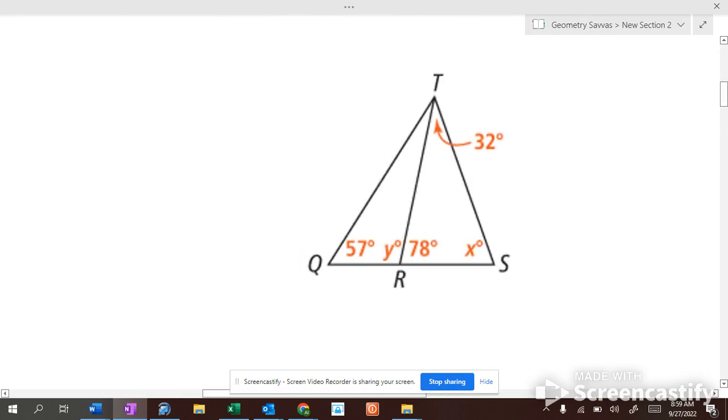How big is angle x? Well, what's 32 plus 78? 110. How many degrees are in a triangle? 180. So, what's left for x? 70 degrees.